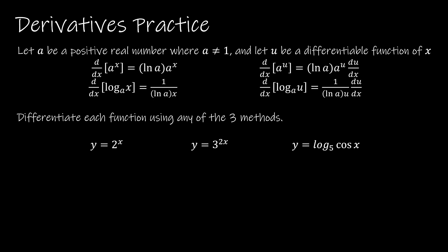Let's look at a few practice questions. I have those rules written at the top so we can see exactly how to apply them. For our first question, y equals 2^x. This is just an exponential function where the exponent does not have its own derivative, so y prime is going to be the natural log of the base — the natural log of 2 — times 2^x. And that's all.